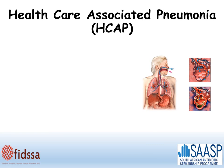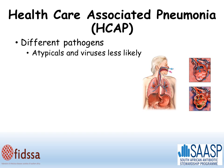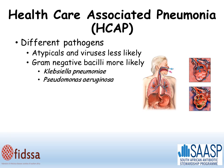Let's use healthcare-associated pneumonia as an example of the differences between community and healthcare-associated infections. You see different pathogens than in community-acquired pneumonia. Atypical organisms and viruses are less likely, although Legionella would be an exception in outbreak settings. Gram-negative bacilli are more likely, with organisms such as Klebsiella pneumoniae, Pseudomonas aeruginosa, and Acinetobacter, which are uncommon causes of community-acquired pneumonia.